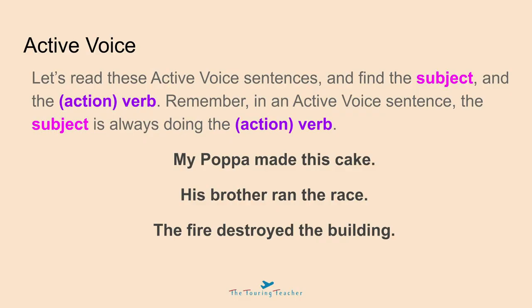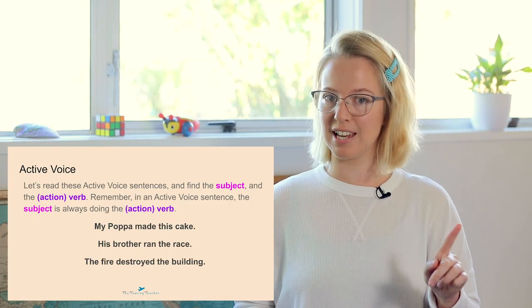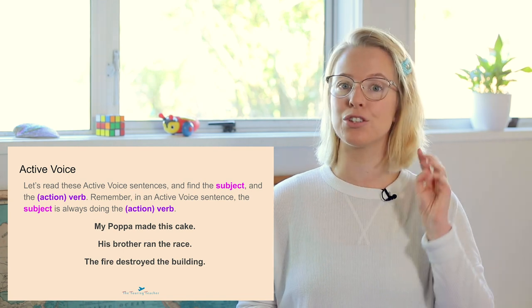Let's look at some active voice examples — not about the cat and mouse anymore, but different topics. See if we can find the subject and the verb in these active voice sentences. Remember, in an active voice sentence the subject is always doing the action, which is the verb. The first one: my popper made this cake. Next: his brother ran the race. Third: the fire destroyed the building. Pause the video and see if you can find the subject and the action in each of these three sentences.